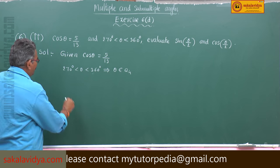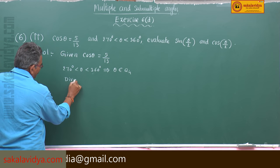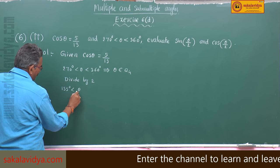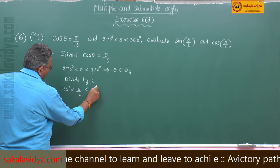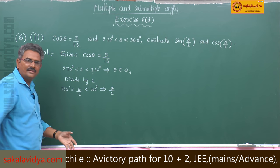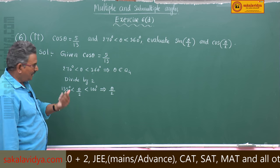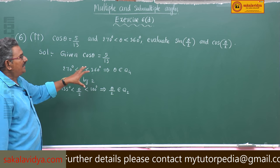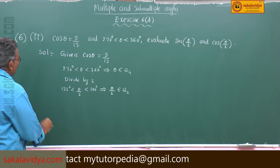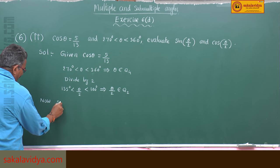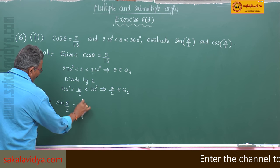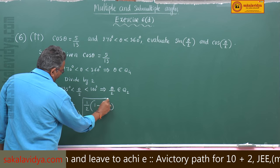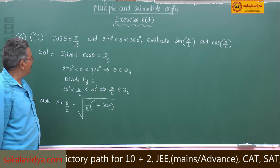In order to find where θ/2 lies, divide the inequality by 2 throughout. So θ/2 lies in the second quadrant. In the second quadrant, sin is positive and cos is negative. So sin(θ/2) will take a positive value.